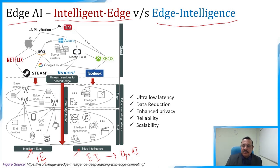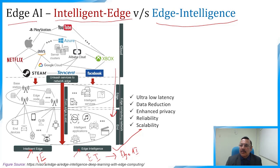Edge intelligence brings the AI services from the cloud to the edge as much as possible, enabling various distributed, low-latency, and reliable intelligent services. Considering that AI is functionally necessary for the quick analysis of huge volumes of data and extracting insights, there exists a strong demand to integrate edge computing and AI, which gives rise to edge intelligence.